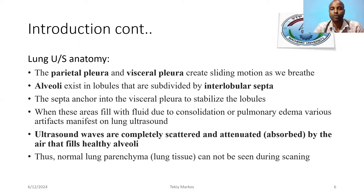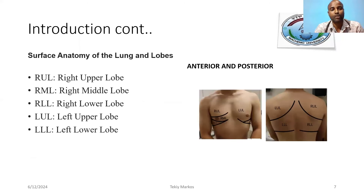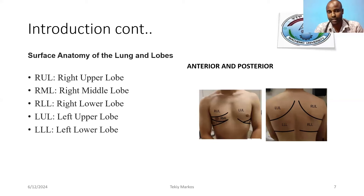Alveoli exist in lobules that are divided by interlobular septum, and the septum anchors the visceral pleura to stabilize the lobules. When these areas are filled with fluid due to consolidation — either pulmonary edema or various other causes — artifacts are manifested on lung ultrasound. Ultrasound waves are completely scattered and attenuated by air in healthy alveoli. Normal lung tissue cannot be seen during scanning.